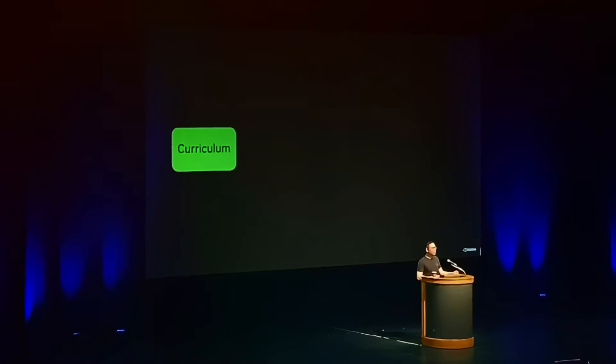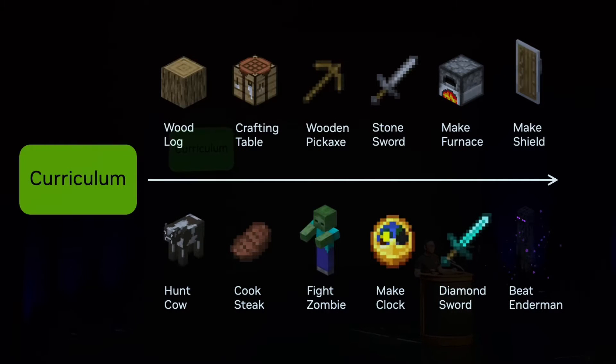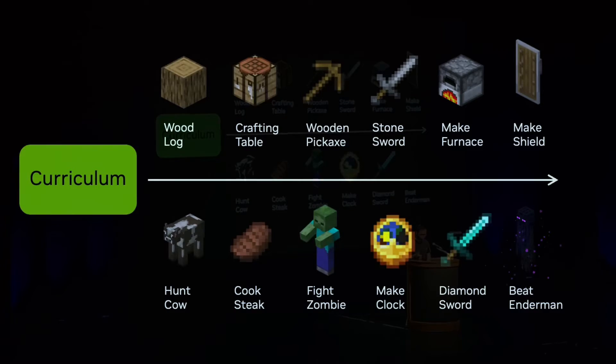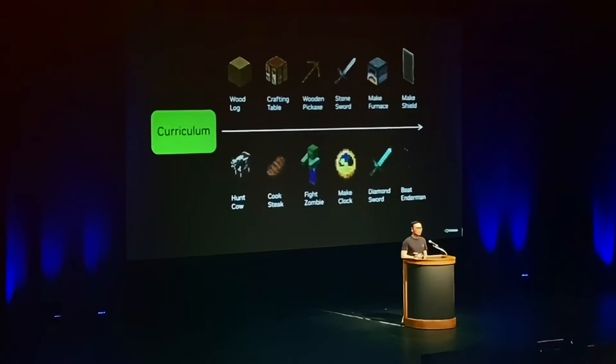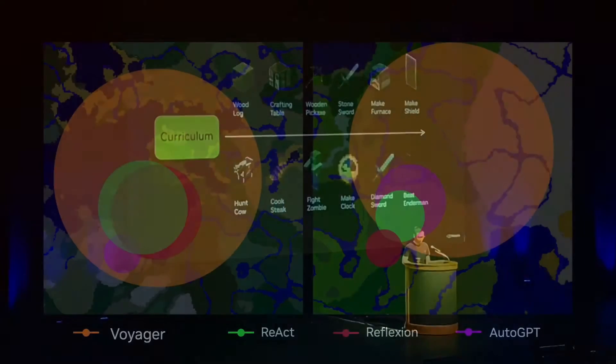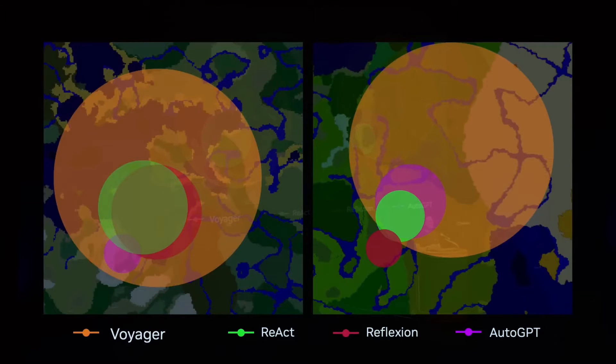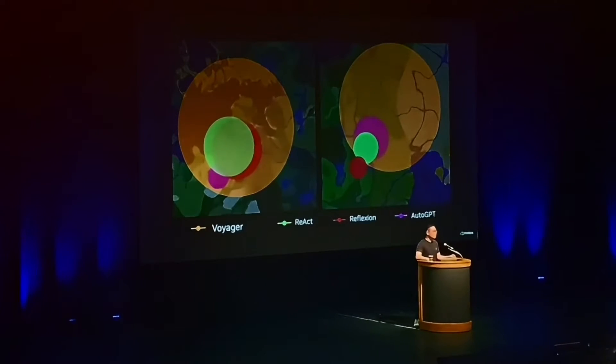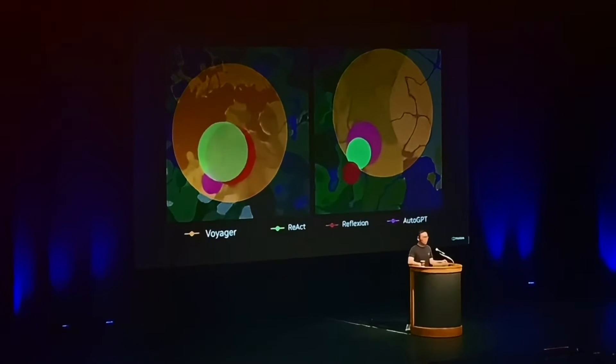How does Voyager keep exploring indefinitely? We give Voyager a high-level directive that is to find as many unique items as possible. Then Voyager itself implements a curriculum to find progressively harder and novel challenges to solve. Here are two bird's-eye views of the Minecraft map. The biggest orange circles are the distances that Voyager travels, compared to many baseline methods. Because it likes traveling so much, that's why we give it the name Voyager.